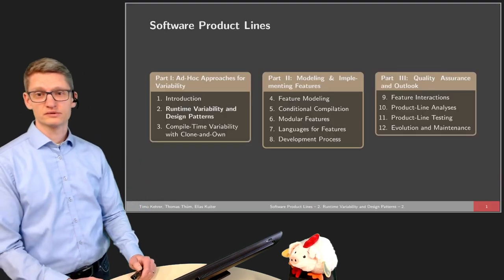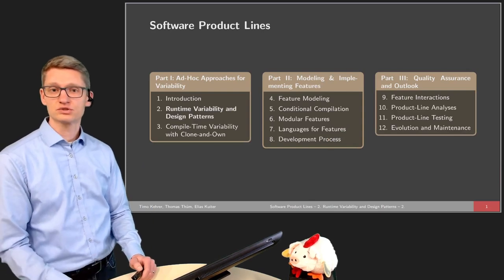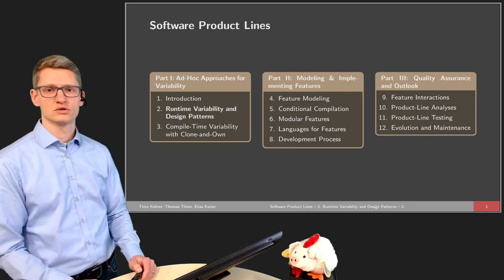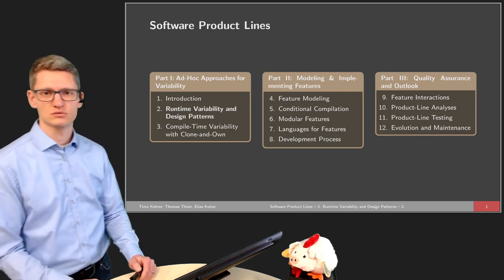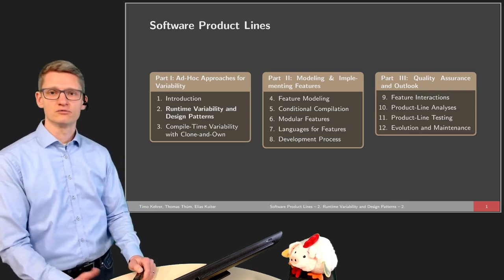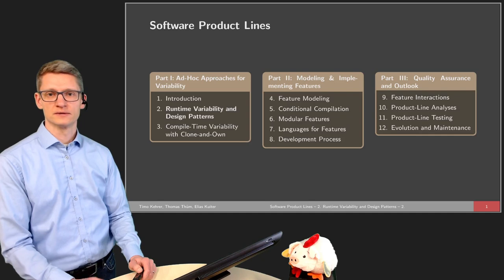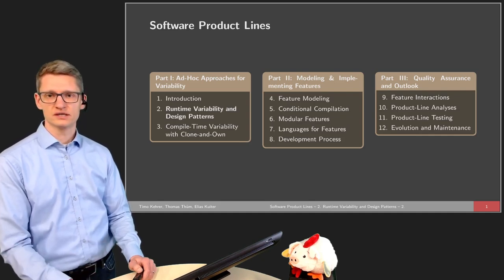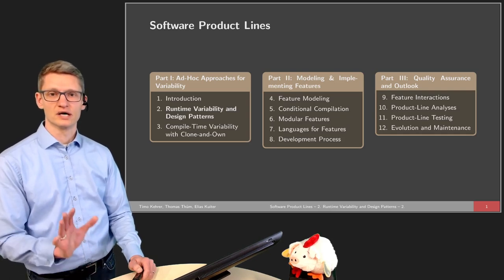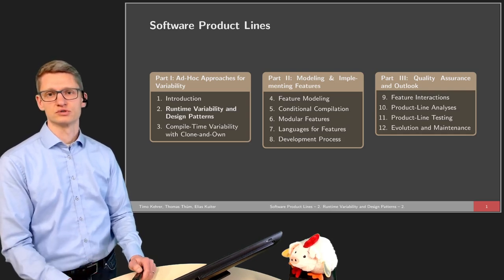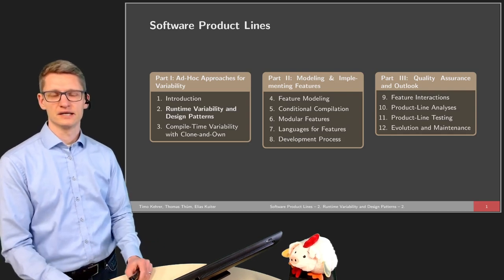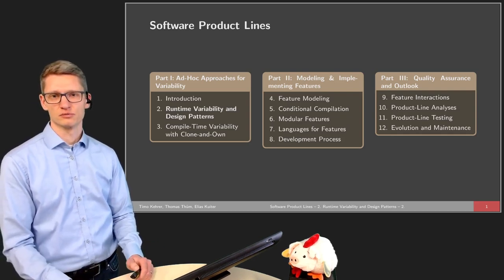We've talked already in the introductory lecture about software product lines and the challenges that we face with product lines. The focus of this lecture is runtime variability, which is considered as one of the rather ad hoc approaches to variability — not already perfectly aligning with the vision of a software product line.